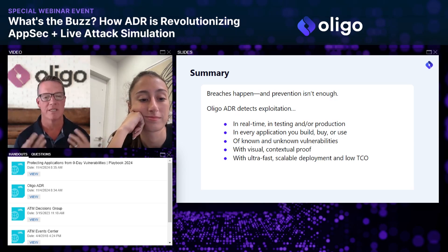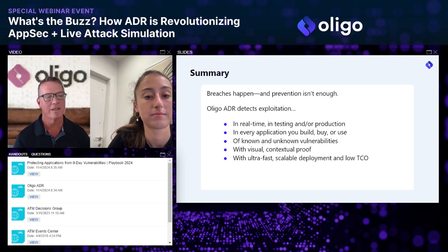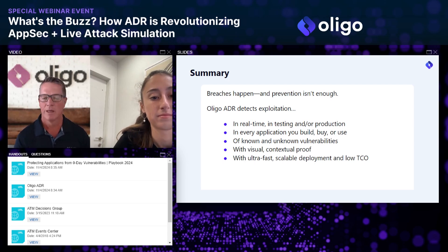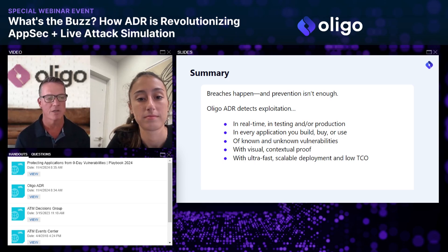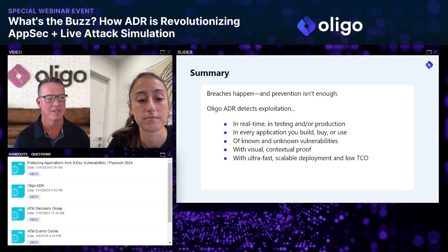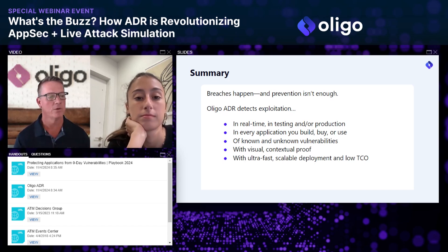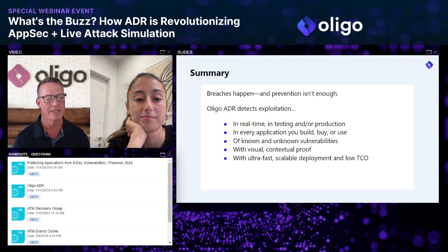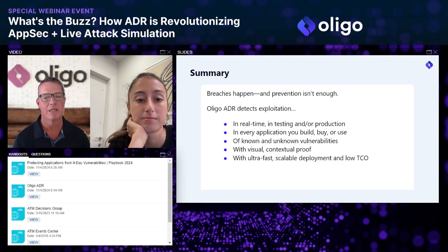Breaches happen — it's very hard to predict every type of attack and stop all of them. What's extremely important is the ability to identify in real time — meaning a running application, whether in testing or production. Being able to detect types of attacks, whether known or unknown, deviations like the latest version of Log4j starting to execute code — you probably want to be aware of it even if nobody's published a CVE. Provide contextual proof with the call stack and trace, identifying what deviation occurred. All of this is built on the fact that we can deploy and scale with minimal impact on applications, giving you tremendous insight and one more control point on your application infrastructure.